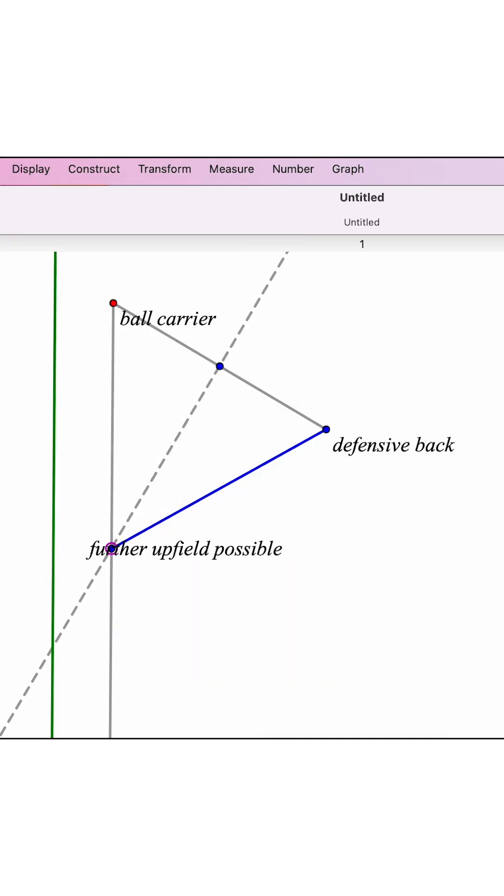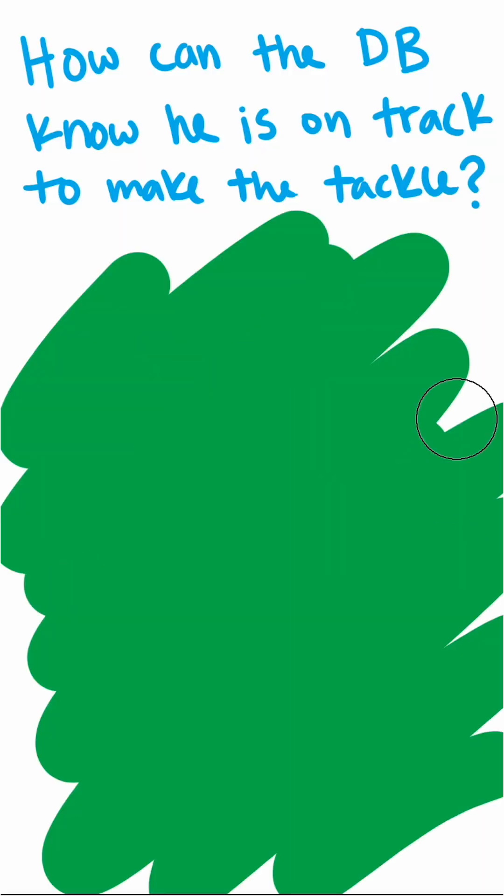This is the soonest the DB can catch the ball carrier, again assuming that they are the same speed. How should the DB know if he's on a collision course? The answer is by the swivel of his head.